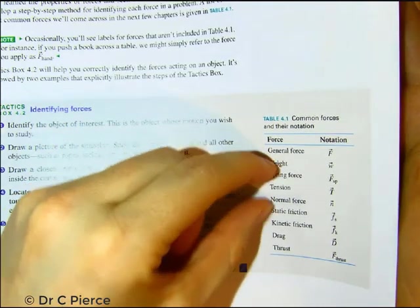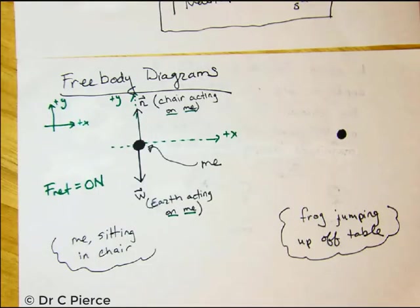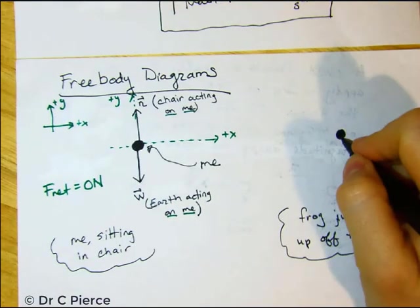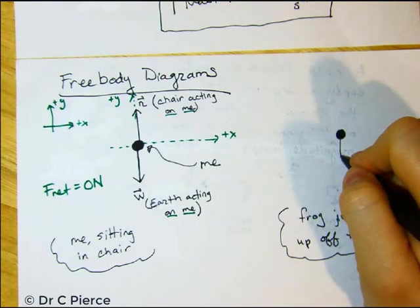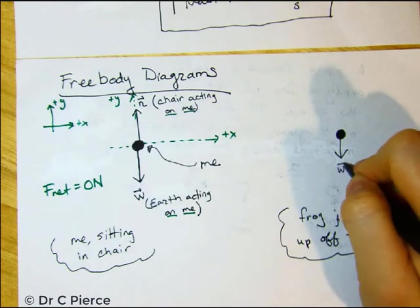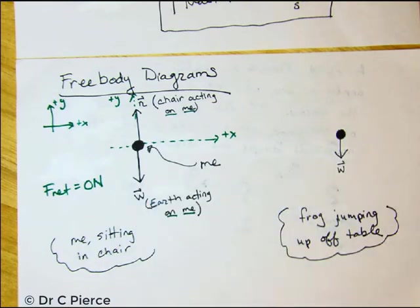All right. So we have a normal force and a weight force. So let's draw those on the frog. So I'll have the weight force acting down. And I drew a bit shorter than before because the frog has less mass. So the frog will have less weight. And we just draw longer arrows to represent stronger forces.